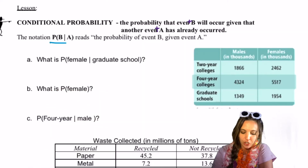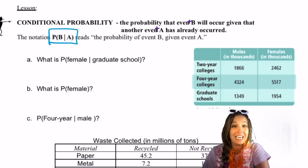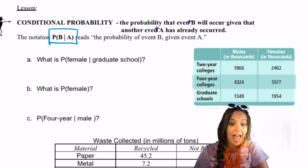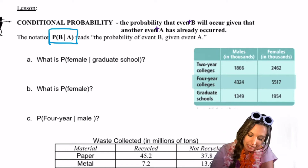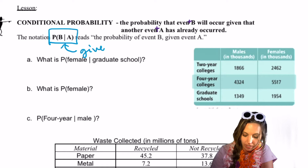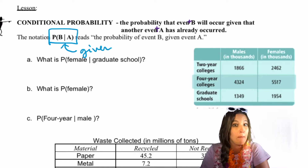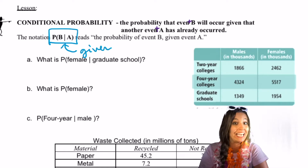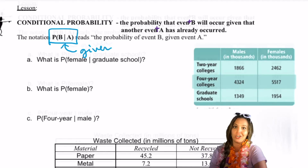We have a new notation to introduce: the probability of B given A. This little bar here stands for 'given,' so it's the probability of event B occurring given that event A has already occurred.